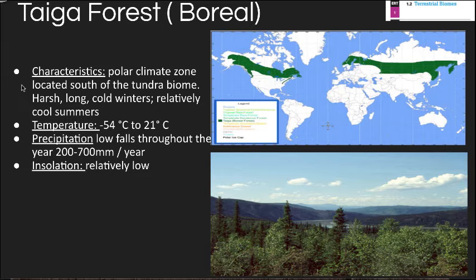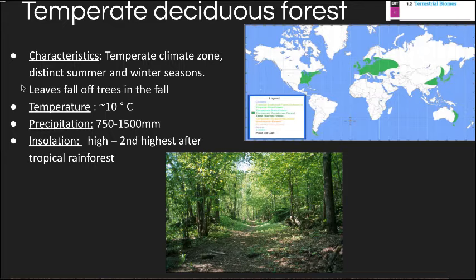The taiga forest is just below the tundra, also called the boreal or coniferous forest. It's still a polar climate zone but not as cold as the tundra, so we don't necessarily see permanently frozen ground year-round. Temperature ranges wildly from -54 to 21 degrees Celsius, and precipitation ranges from 200 to 700 millimeters — more than the tundra, which changes the types of plants and animals found there. Insolation is still not very high.